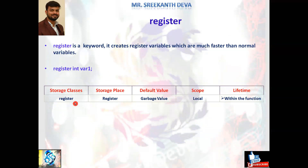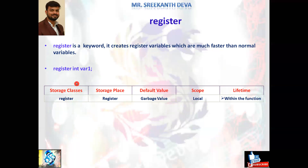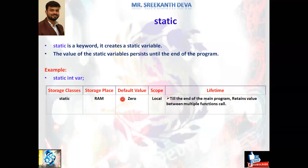register is a keyword and a storage class. It creates register variables which are much faster than normal variables. For example, register int var1. This storage class allocates memory in CPU registers. The default value is a garbage value, and the scope is local. Lifetime is within a block or function body. The difference between auto and register: auto variables are stored in main memory (RAM), while register variables are allocated in register memory.